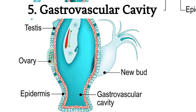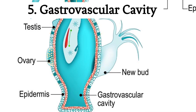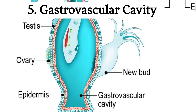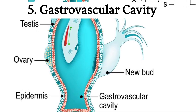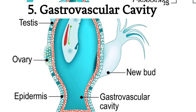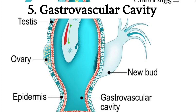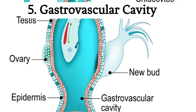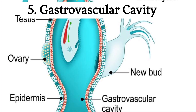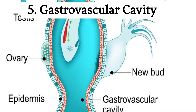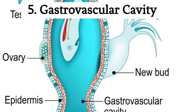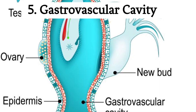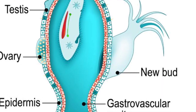5. Gastrovascular Cavity: Cnidarians have a central gastrovascular cavity with a single opening that functions as both the mouth and anus. This cavity aids in digestion and the distribution of nutrients.